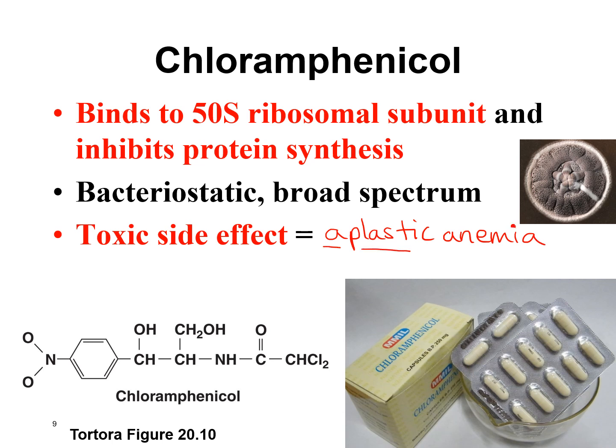Aplastic anemia — 'a' means without, 'plastic' means growth, and anemia refers to a low number of blood cells. What happens is chloramphenicol triggers an autoimmune disease where your immune system attacks the stem cells in your bone marrow and kills them. You can no longer make red blood cells, white blood cells, or platelets — none of your blood cells. That will obviously lead to death, and to treat it you'd have to do a bone marrow transplant to give the person new stem cells.